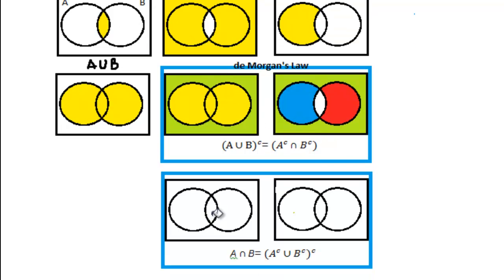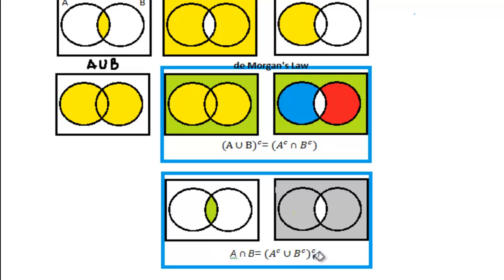That green region is the same as the green region here. Another version of De Morgan's Law states that A intersection B is the same as NOT (NOT A union NOT B). Starting with the expression inside the brackets: NOT in A is this stuff and this stuff. NOT in B would be this stuff and this stuff. So NOT A union NOT B covers this, this, and that. Now we still have the complement outside the brackets to evaluate. NOT (NOT A union NOT B) is clearly just this green region — the same as A intersection B.